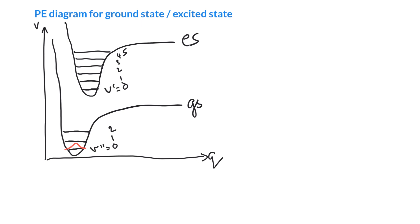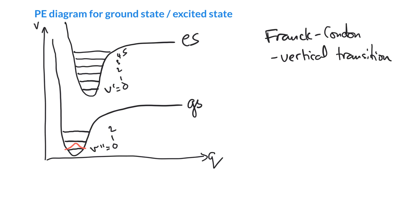We have to remember the Franck-Condon principle, after Franck and Condon. Basically, we can interpret this as saying we have vertical transitions. When we transition from one electronic state to another, we go straight up and straight down. Why? Because horizontally, this is telling us about the motion of the atoms themselves, and electrons move super fast — the electrons move kind of like gnats on the back of an elephant. The electrons move instantaneously compared to the nuclei, so the atoms don't have time to move while the electrons are moving. All our transitions are therefore vertical.